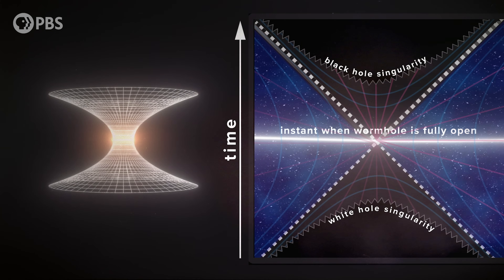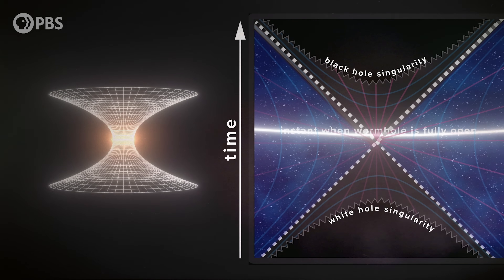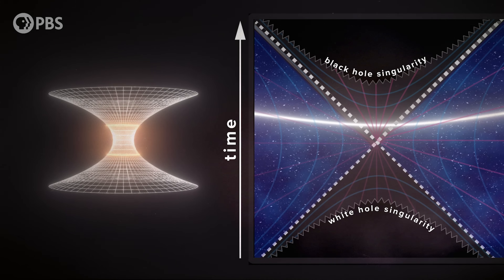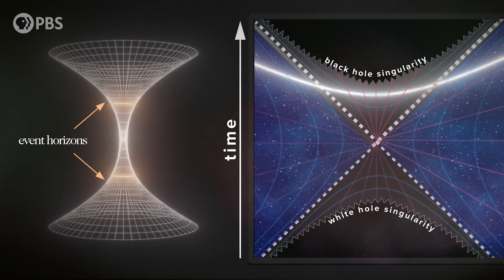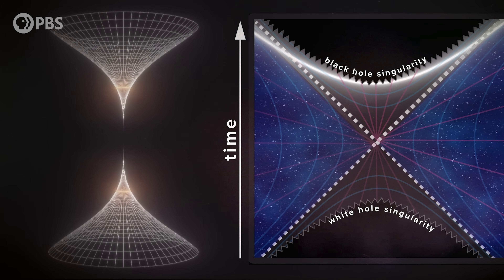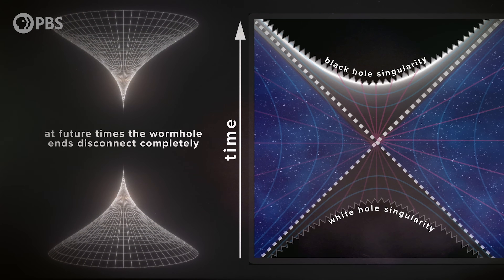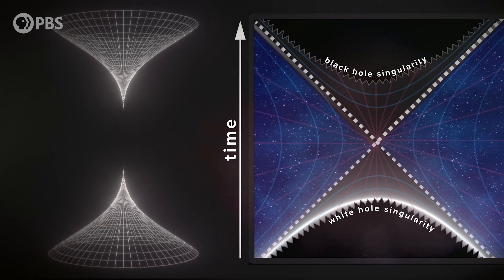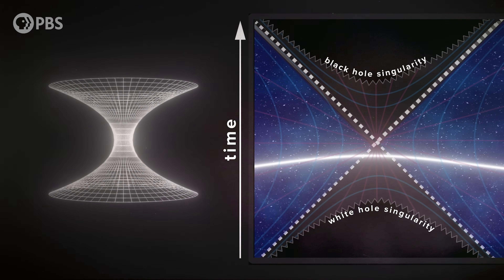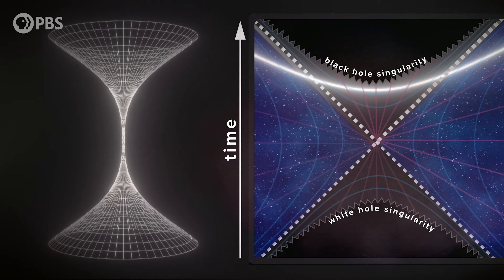To really understand this, we need to see how the wormhole evolves. The embedding diagram was a particular time slice of the Schwarzschild spacetime. If we take a slice a little further in the future, the wormhole throat has narrowed, and passing through means crossing two event horizons – the region in between is the inside of a black hole. When that time slice hits the singularity, the wormhole has closed. Including past time slices, we see the full evolution: it opens, widens, shrinks, and then pinches off again.